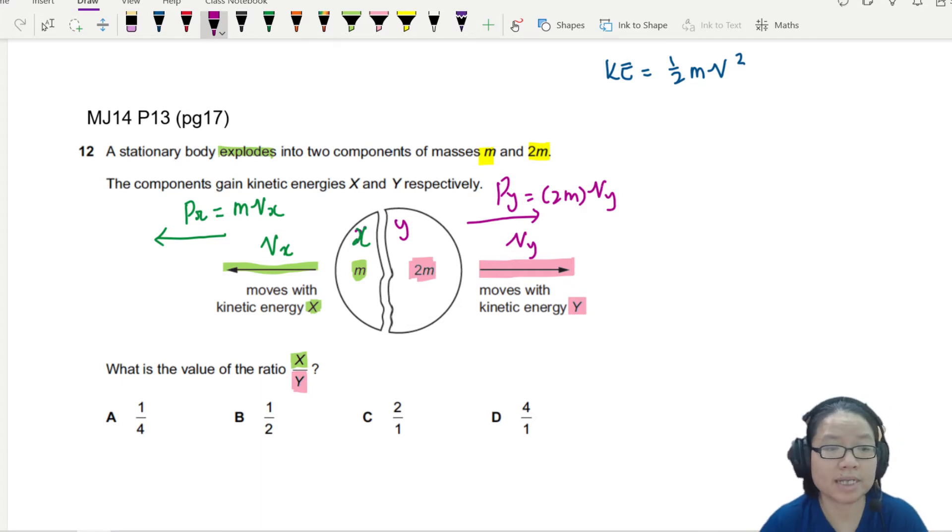So what we really need is not the actual value of m or y. We just need ratio. For example, I know the ratio of the mass, 1 to 2. So now I need to know the ratio of the velocity, so I can input into the equation. So I guess the first thing that I will do is to use conservation of momentum.